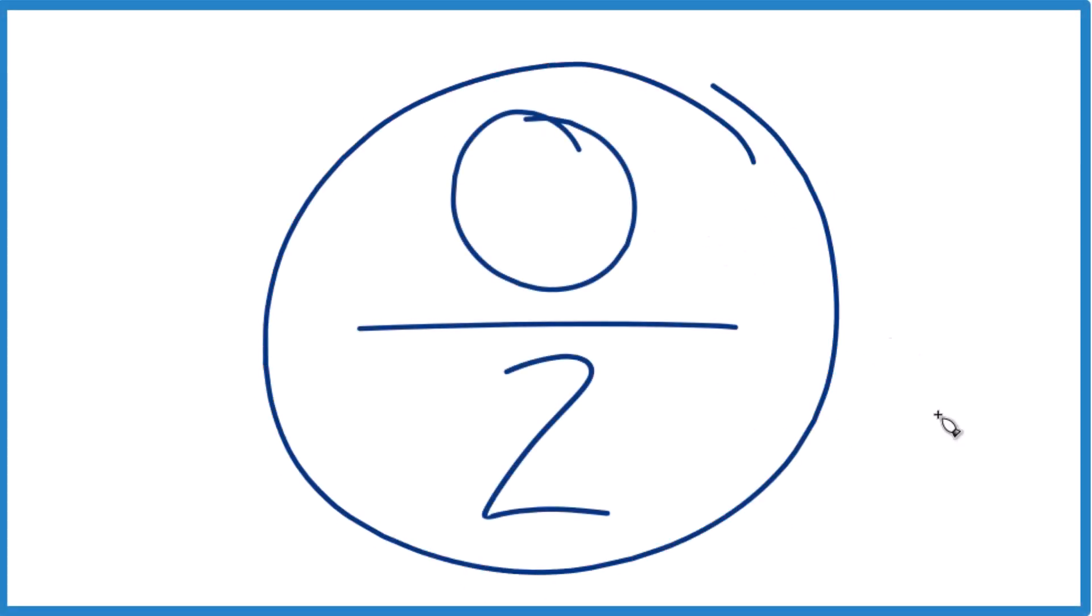Let's take a look at 0 over 2. What is that equal to? So we have 0 divided by 2. We want to simplify that. What is it going to be equal to?